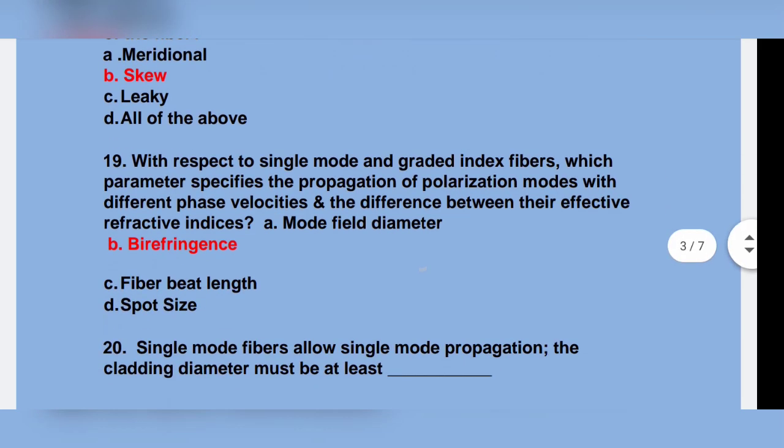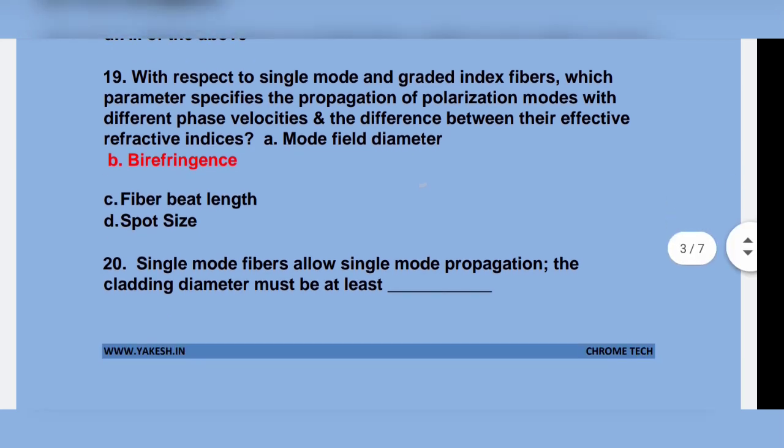With respect to single-mode graded index fiber, which parameter specifies the propagation of polarization modes with different phase velocities and the difference between them? Option A: refractive index. Option B.